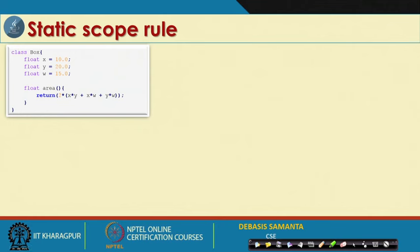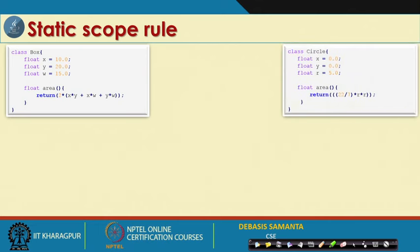Let us see a small program. Here is a class declaration called class Box. This class has data as well as a method — in this case, area is the method, and X, Y, and W are the members of this class. Now let us consider another class called Circle. The Circle class has data like X, Y, R, and another method called area.